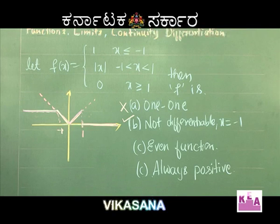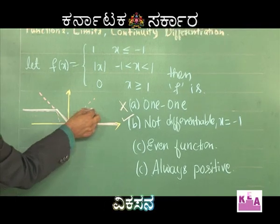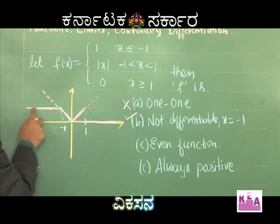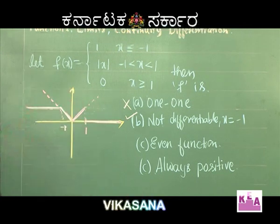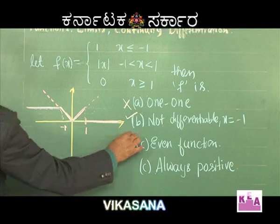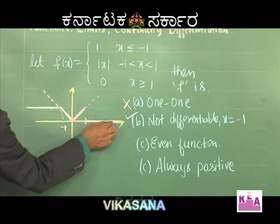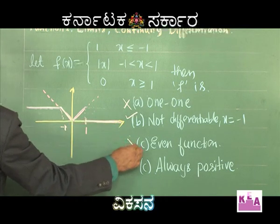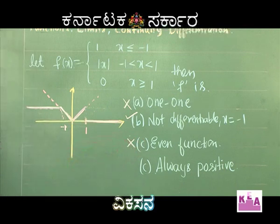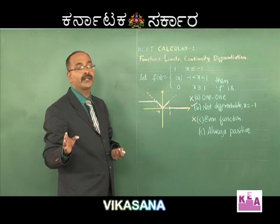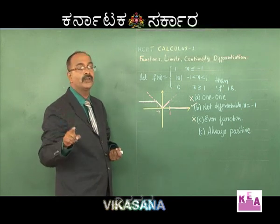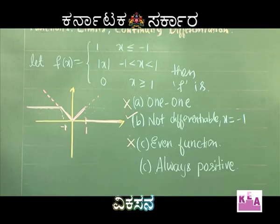Is it an even function? If the graph were symmetric, we would say it is even because the y-axis acts as a mirror. But as the graph is not symmetric, it is not an even function. That does not mean it is odd — not all non-even functions are odd. There is a third category: neither even nor odd.